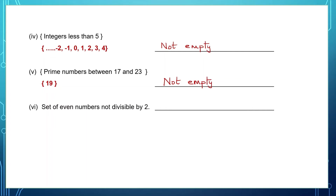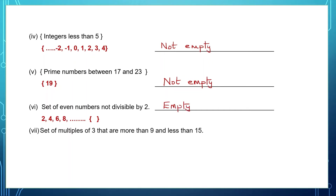Set of even numbers not divisible by 2. All even numbers are divisible by 2. So can we have a set of even numbers not divisible by 2? All of these are divisible by 2, so this set is empty — it doesn't have anything in it. Set of multiples of 3 that are more than 9 but less than 15: 12 is there between 9 and 15, so there is one element in that set — that set is not empty.